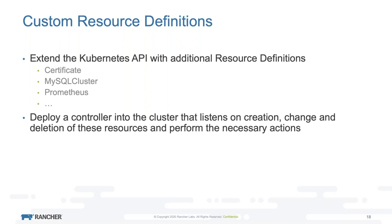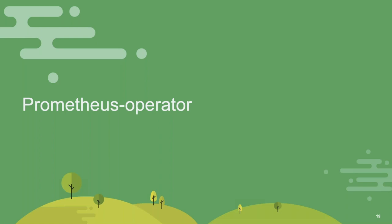For example, for a certificate resource, you could imagine a pod that constantly listens for the creation of certificate resources, and if you create one, this controller will go to Let's Encrypt, request a new TLS certificate, handle renewal, and the whole challenge mechanism that Let's Encrypt has. These controllers that extend the Kubernetes API are also called operators, and one of them is the Prometheus operator that powers the monitoring under the hood that Rancher uses.